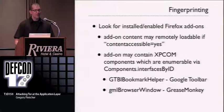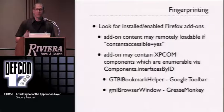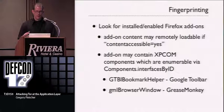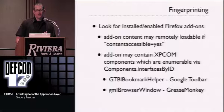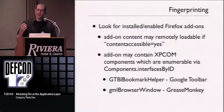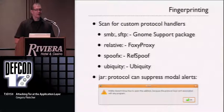We can also look for installed and enabled Firefox add-ons. In the old days with Firefox 2, components exposed themselves via Chrome and Chrome content could be easily retrieved. Some extensions still do this by setting content-accessible=yes in their manifest files. Torbutton blocks this, so I looked at components that expose their own XPCOM interfaces — for example, Google Toolbar exposes GTBIBookmarkHelper, and GreaseMonkey exposes GI_browser_window. By testing for these we can identify specific extensions. As we do this, we can start to slice people up — certain people have certain add-ons, and using intersection attacks we can reduce anonymity sets.